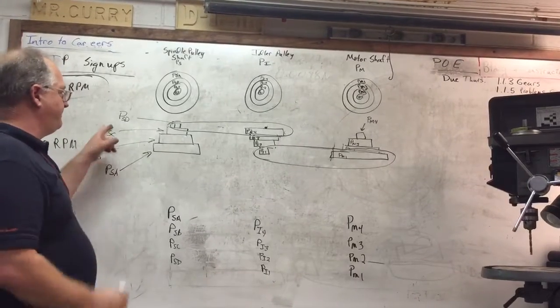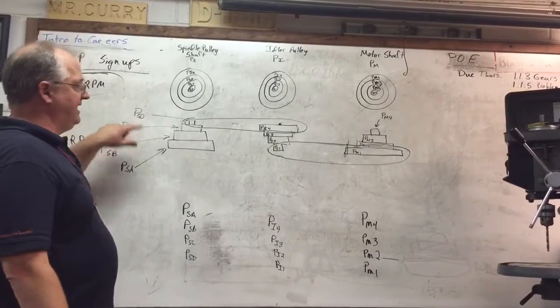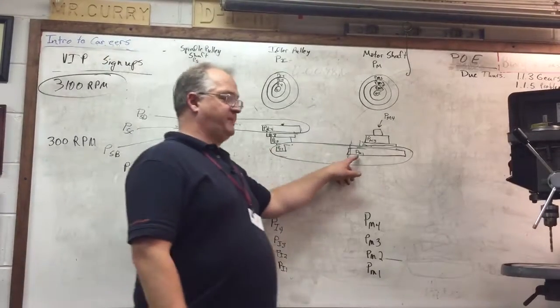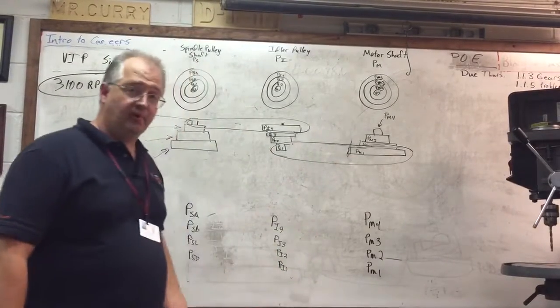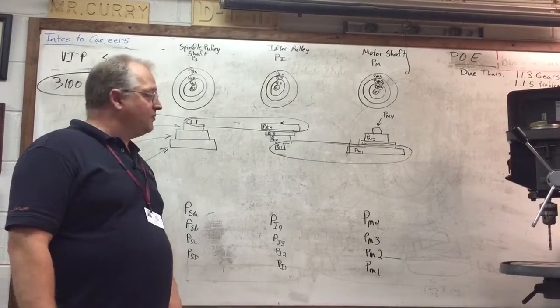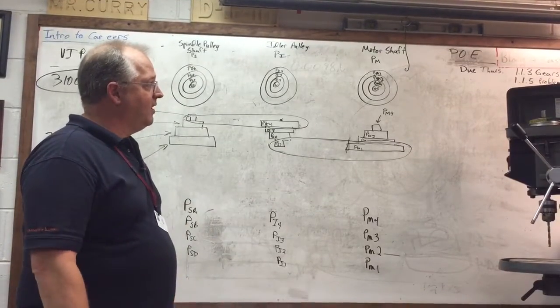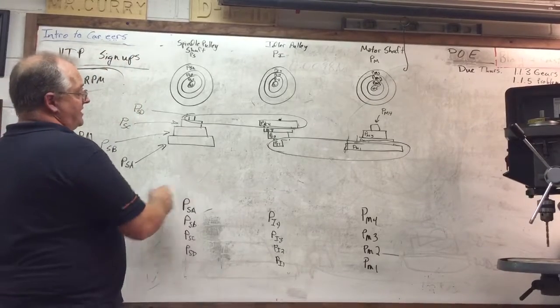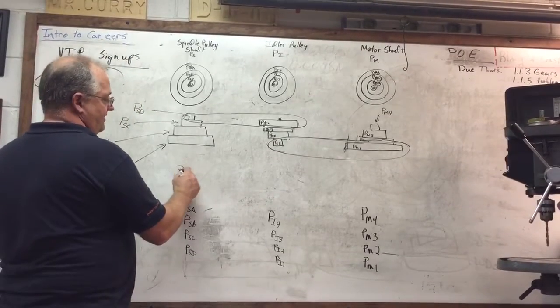We're going to be concentrating on PSD, PI4, PI1, and PM1, the pulleys that we're going to look at when we determine, because we know that this gives us a spindle RPM on our shaft of 3,100 RPM.